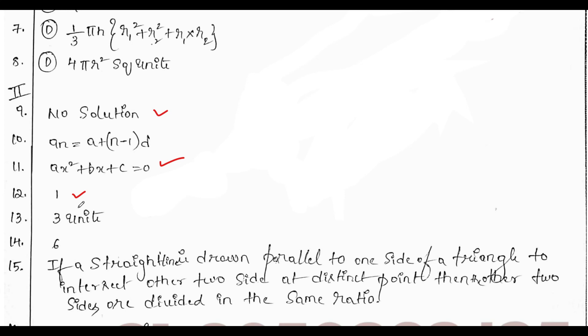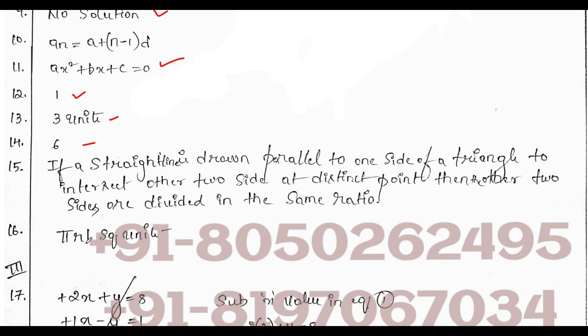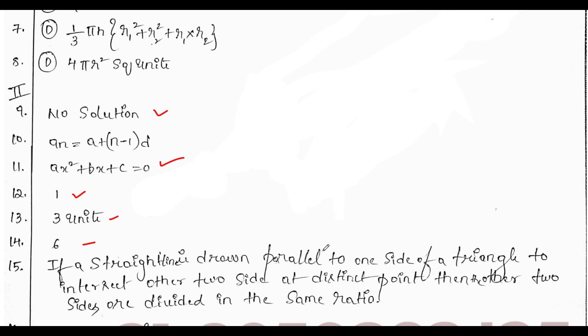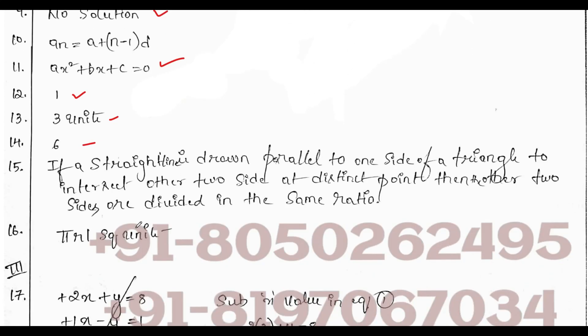The median is what? First, we need to arrange the numbers or the data in the ascending or descending order. We get median as 2. Next, the statement of Thales theorem. If a straight line is drawn parallel to one side of the triangle to intersect the other two sides at distinct points, then the other two sides are divided in the same ratio.